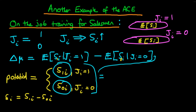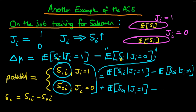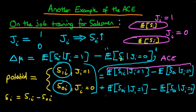We take the first expression — the expected value of S1i given Ji equals one — and subtract the expected value of S0i given Ji equals one. Because we've subtracted this term which wasn't in the original expression, we then have to add it back. So we add the expected value of S0i given Ji equals one, and then finally we have minus the expected value of S0i given Ji equals zero. This top expression is what we call the average causal effect, and the bottom expression is what we refer to as the selection bias effect.